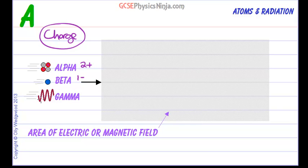And what about a gamma ray? Well a gamma ray is a wave, it is an electromagnetic wave, it is zero charge.